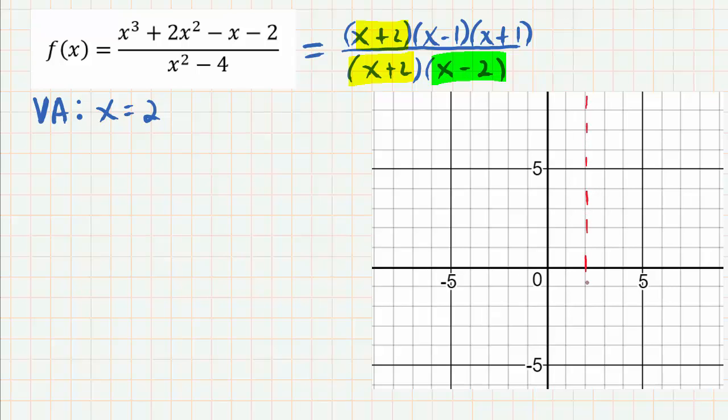Now the other zero of the denominator is going to generate a hole, so there will be a hole at x equals negative 2. Now to figure out what the y coordinate is, we actually cancel out the x plus 2, reducing the fraction to - let's multiply it back out - x squared minus 1 over x minus 2.